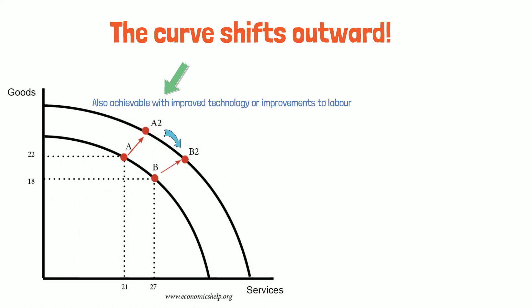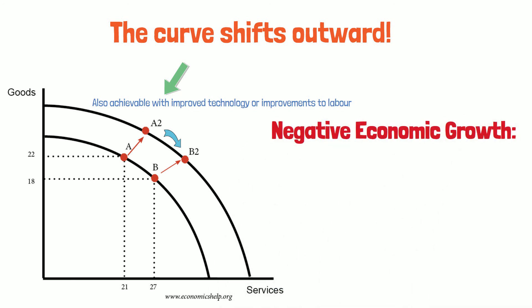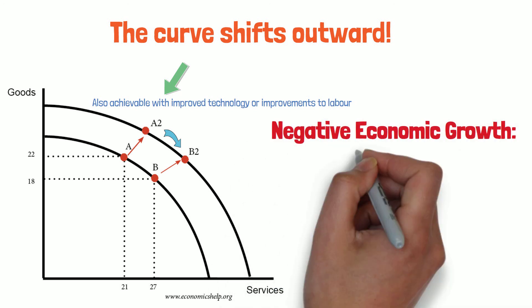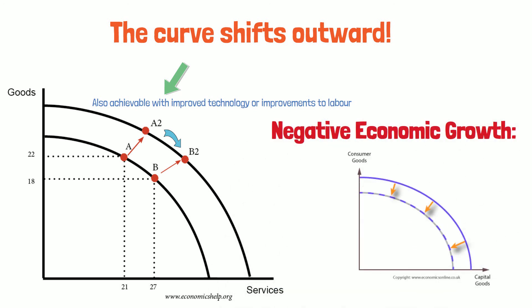Improved technology, or improvements to labor, can also shift the PPF outward, because it allows more output to be produced using the same resources. Now, if we're talking about fewer total resources available, the opposite happens. The PPF shifts inward, showing that the total possible output has shrunk. This means negative economic growth.